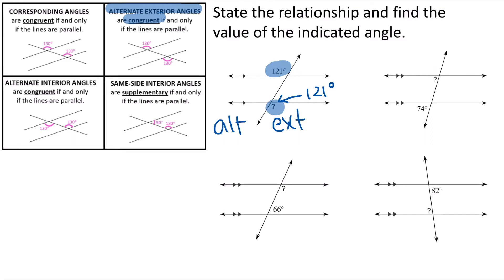For the second picture, we have a 74 and a question mark. These two angles are corresponding angles, or CORR for short. Corresponding angles are always congruent. So if this one is 74, our question mark will also have to be 74 degrees.